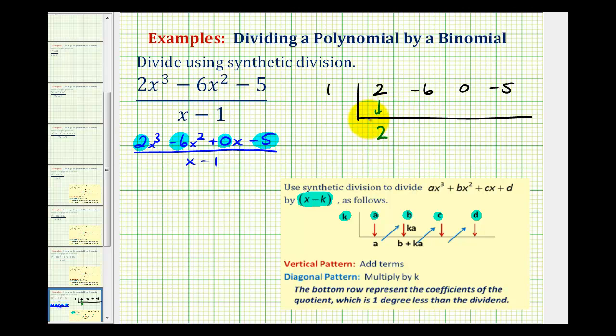Every time we have a term here, we're going to multiply it by one and place it in the next column. So two times one equals two. Then we add vertically. Negative six plus two is negative four. Then negative four times positive one is negative four. Add, and we get negative four. Then negative four times positive one is negative four. Add, and we have negative nine.